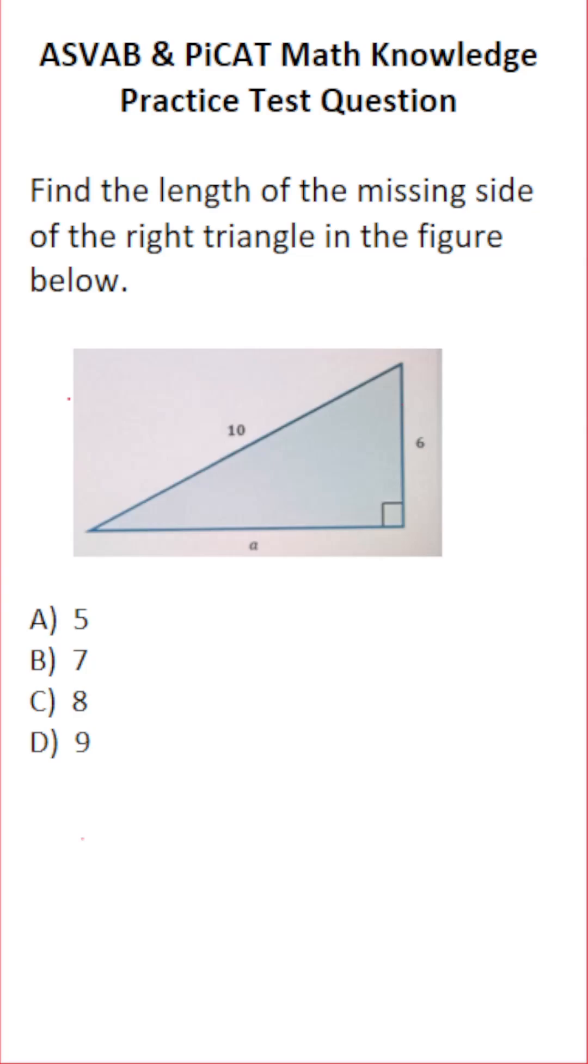This math knowledge practice test question for the ASVAB and PiCAT says find the length of the missing side of the right triangle in the figure below. So in order to find the missing side length in a right triangle, you're always going to use Pythagorean theorem, which has a squared plus b squared equals c squared.